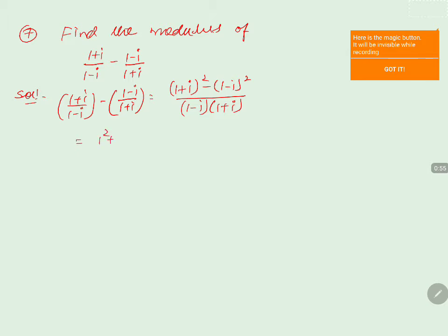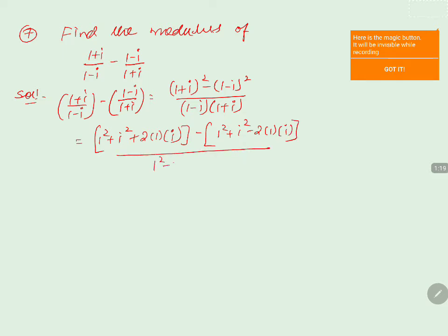(1+i)² can be written as 1² + i² + 2·1·i, using the formula a² + b² + 2ab. The second term, (1-i)², expands using a minus b whole square as 1² + i² - 2·1·i. The denominator is 1² - i². Substituting i² = -1: numerator first part gives 1 + (-1) + 2i = 2i, and second part gives 1 + (-1) - 2i = -2i.